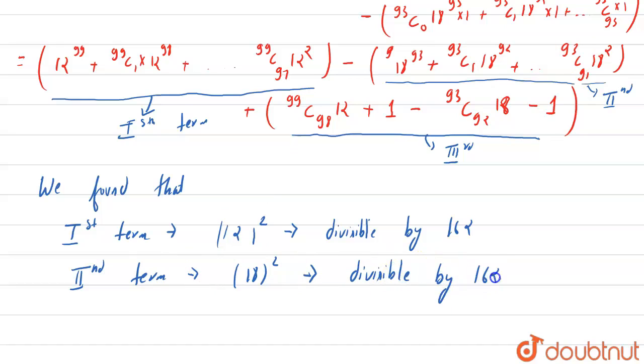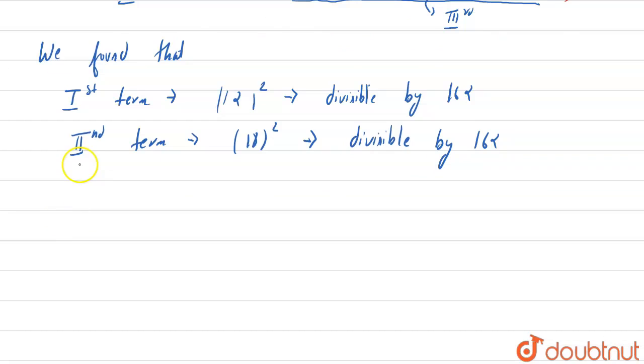Now if we compare the second term, this is 18 power 2, so this is also divisible by 162. Now we come to our third term, which is minus 482, and you can see this is also divisible by 162.